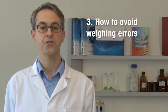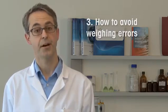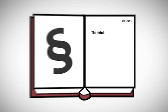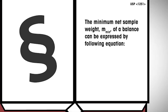The last thing you should know about the new USP weighing chapters is how to avoid weighing errors. The minimum net sample weight, Mmin, of a balance can be expressed by following equation. We've already seen the Chapter 41 criteria for repeatability. Solving this equation for the mass yields that the minimum weight must be equal or larger than 2000 times s.